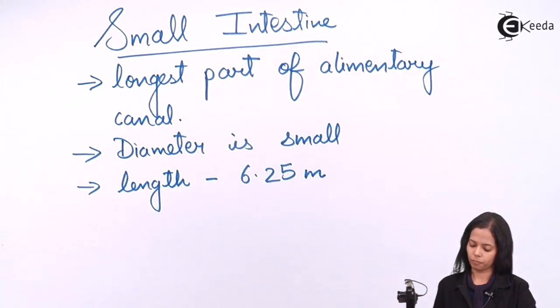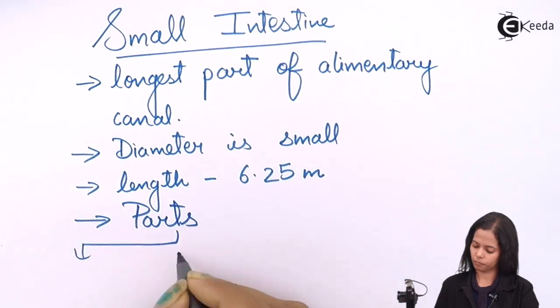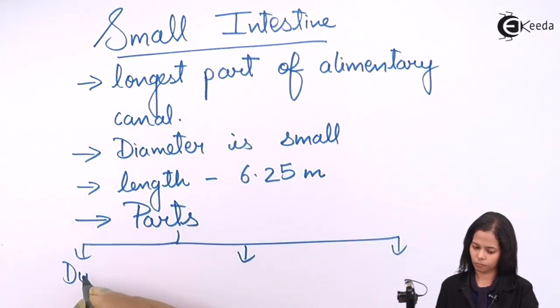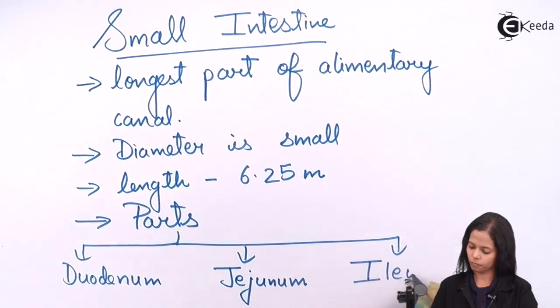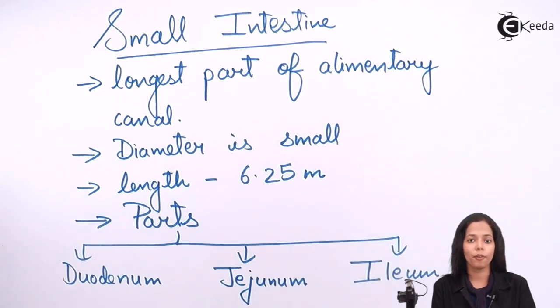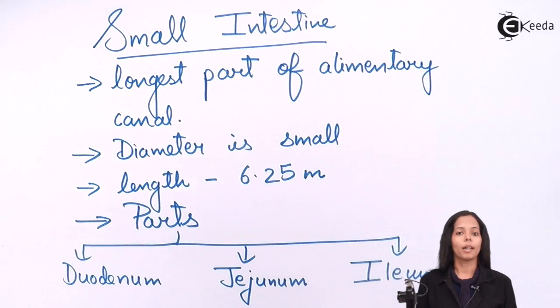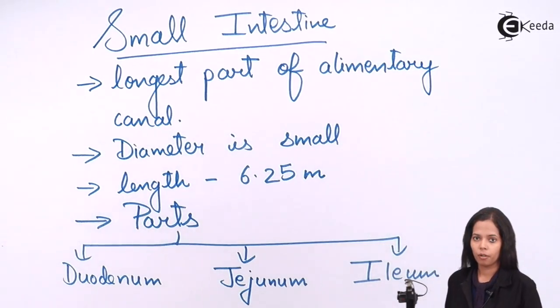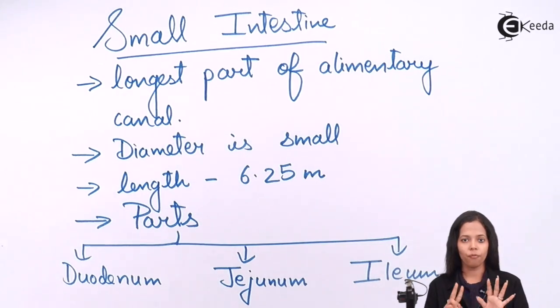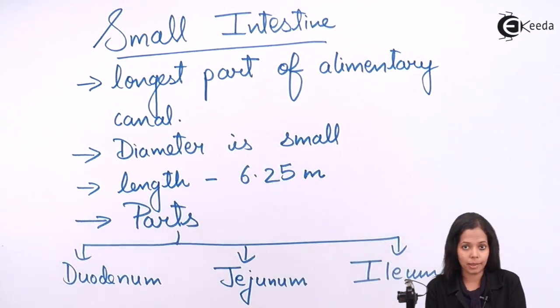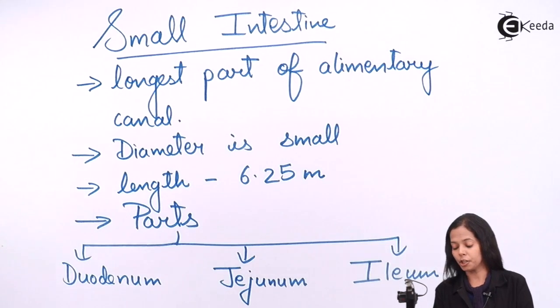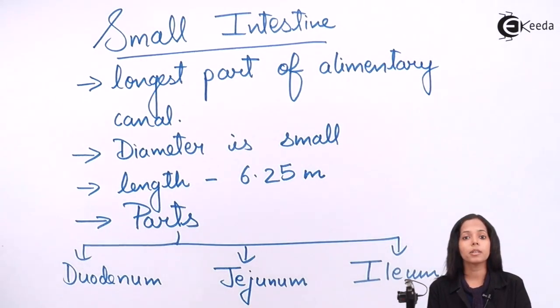Speaking about duodenum, in Latin duodenum means 12 finger structure. The length of duodenum is 12 fingers of your hand. This is the widest part of small intestine and also the beginning part.